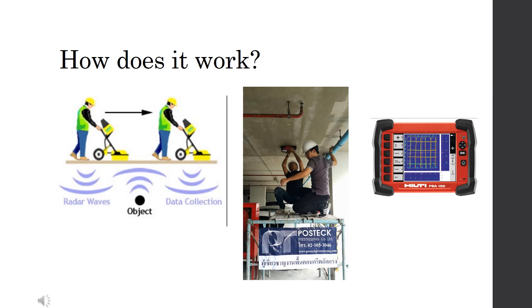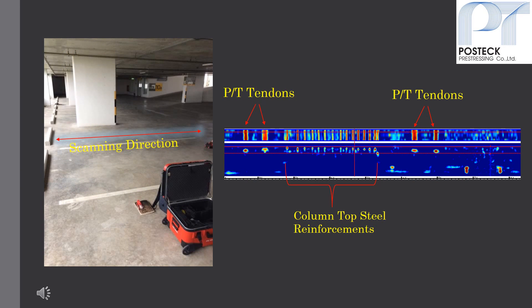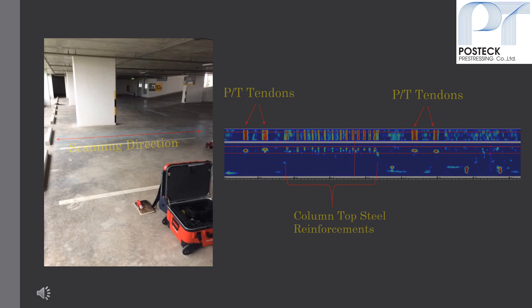This is used to locate objects such as rebar, conduits, and post-tension cables embedded in concrete. A high frequency GPR system is used. The data can be collected in simple line scans to determine the thickness of concrete.